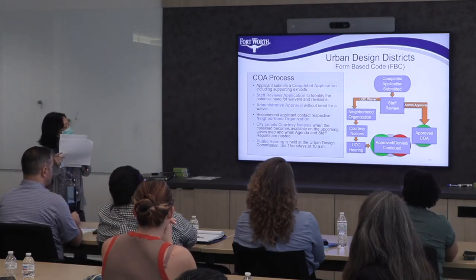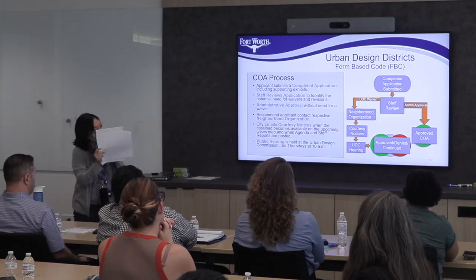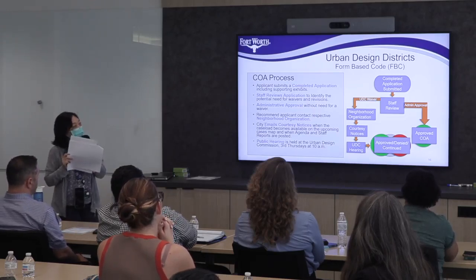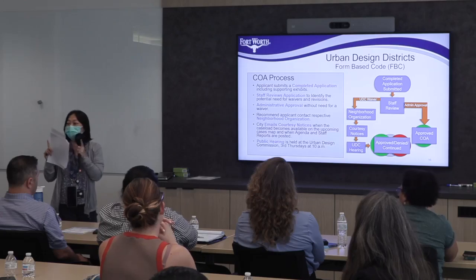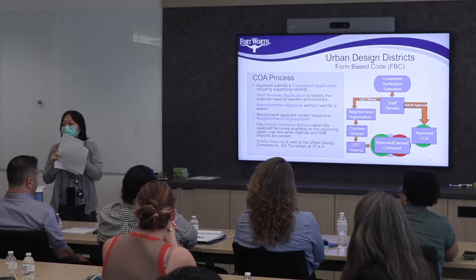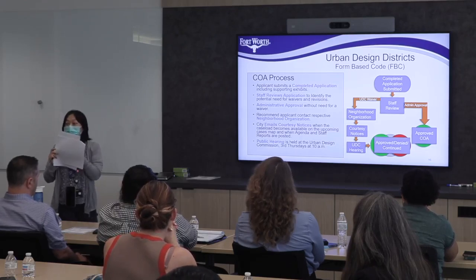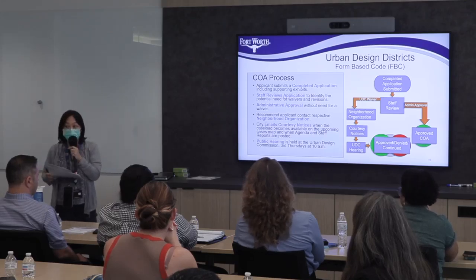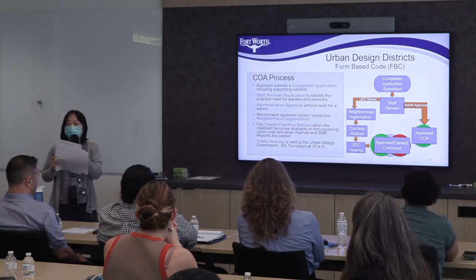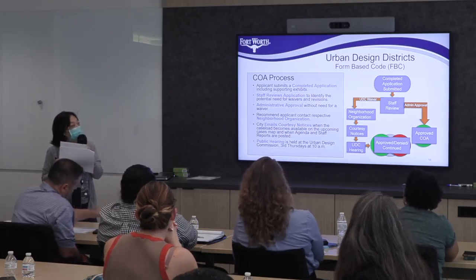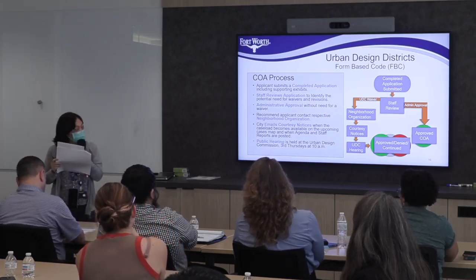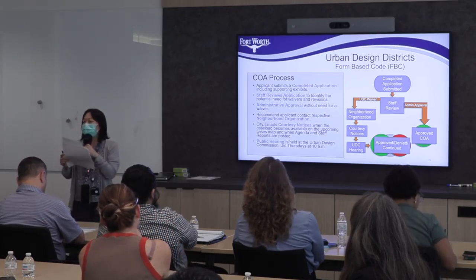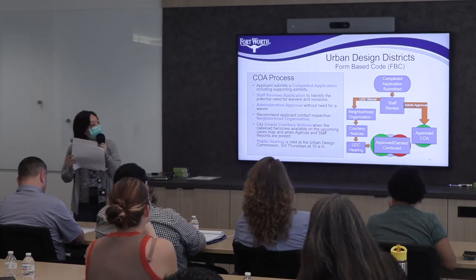Next is the COA process. You can see there are two different roads. When you apply for the COA, our staff will review it first, and it goes one of two ways: if you fully comply with the code, we can approve through administrative approval — that would be faster. If not and you need a waiver, then you go to the UDC for the hearing. We recommend that you go to the neighborhood organization to get their support, and then we will give you notice before the UDC hearing and complete the process after the UDC meeting.